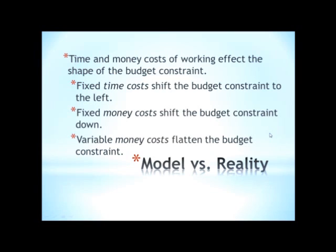A fixed money cost is a money cost that does not change with the hours worked. A uniform might be a good example: it doesn't matter whether you work 10 hours a week or 40, you need the uniform. So this is just going to be a downward shift in the budget constraint. If there is some non-labor income, it would just shift down from that point. If there is no other non-labor income, then it would shift down so that the point at which you had zero income would be a point where you actually spent a few hours working.